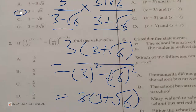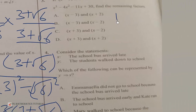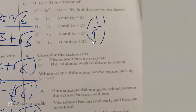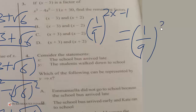Question 2: if 1 over 9 to the power (2x minus 1) equals 1 over 81 to the power (2 minus 3x), find the value of x. Note that 1 over 81 is the same as (1 over 9) squared, so when you evaluate that you get 1 over 81, and there is already (2 minus 3x) as the exponent.